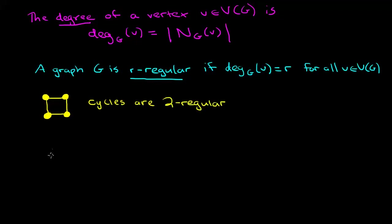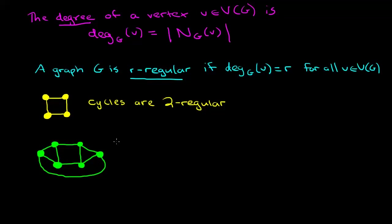Now let me construct an example which is going to be three-regular. If you take a close look and check every single one of the vertices in this graph, you'll notice that each one has degree three. So this is a three-regular example. Three-regular graphs are studied so often that they have their own special name — cubic.